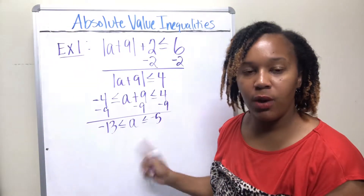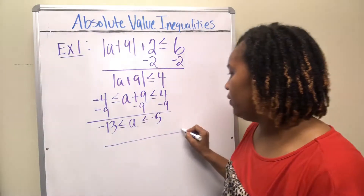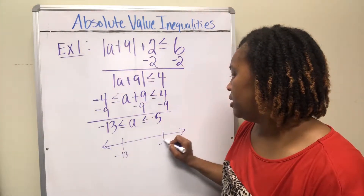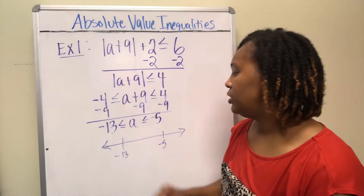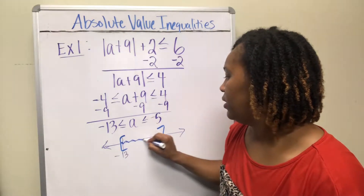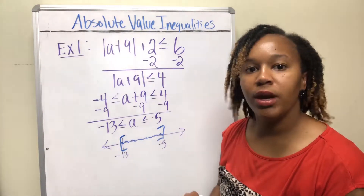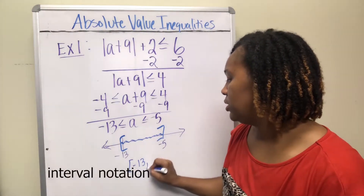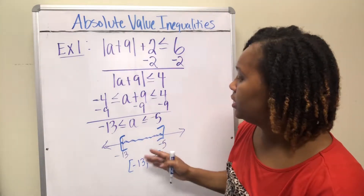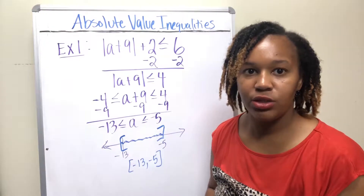The goal of the three-part inequality is to get the variable in the middle by itself, and we've accomplished that. The answer is everything between -13 and -5. Since there are lines underneath the inequality symbols, use brackets. In interval notation, that's [-13, -5]. Any number between -13 and -5 plugged in gives a true statement; anything outside does not.